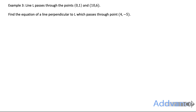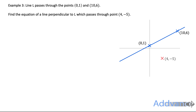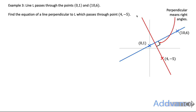Example 3: Line L passes through the points (0, 1) and (10, 6). Find the equation of a line perpendicular to L which passes through the point (4, minus 5). We draw a quick sketch with the blue line through (0,1) and (10,6), and the red perpendicular line through (4, minus 5) with a right angle marked. We'll find the gradient of the blue line, use that to get the perpendicular gradient, then solve for c.